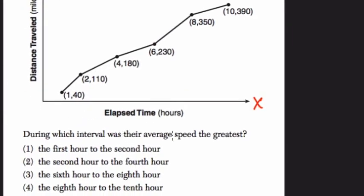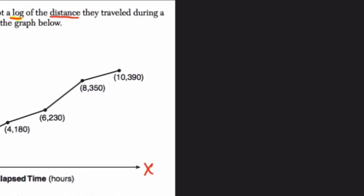They're asking during which interval was their average speed the greatest. So here, if you remember, distance, the distance you travel equals the speed or r you're traveling at times the amount of time you're going.